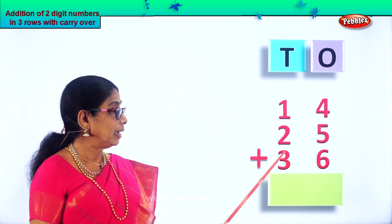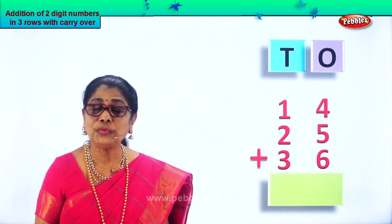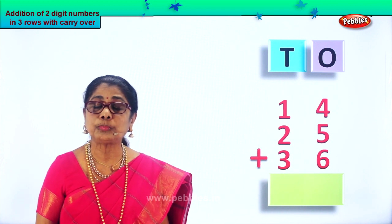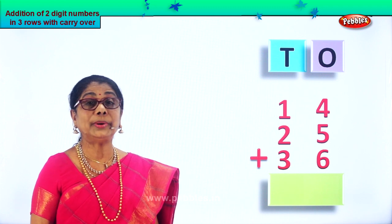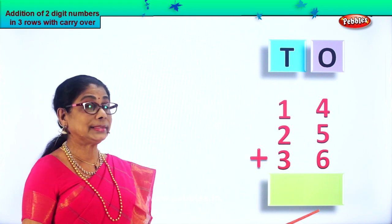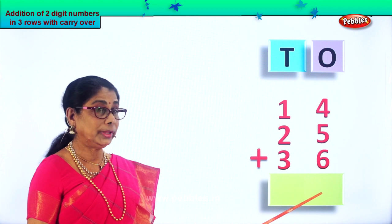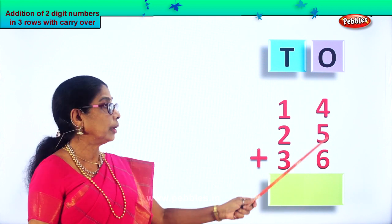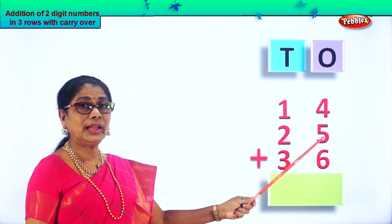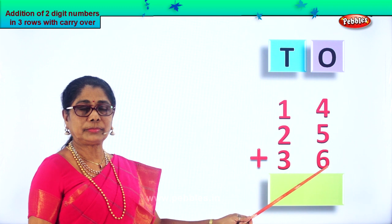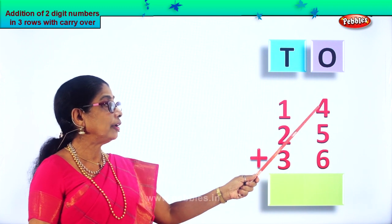14 plus 25 plus 36. What do we do first? Add all the numbers in the ones place and put it down here. Four plus five plus six.